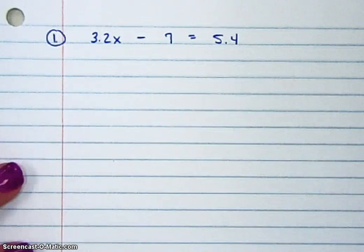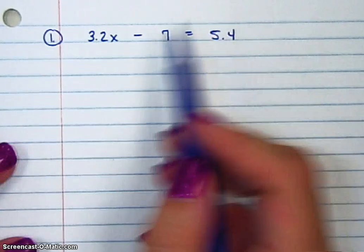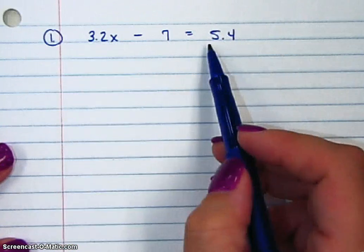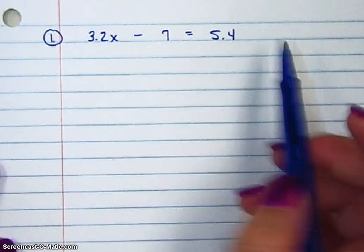Alright, this time I'm going to show you how to clear decimals. Notice, 3.2 or 3 and 2 tenths, 5.4 or 5 and 4 tenths.